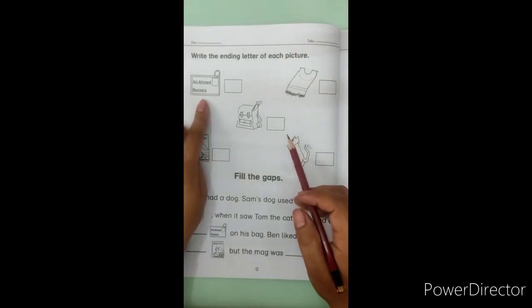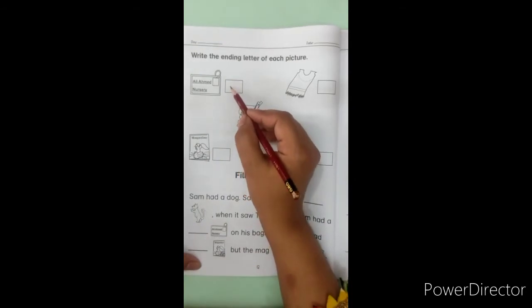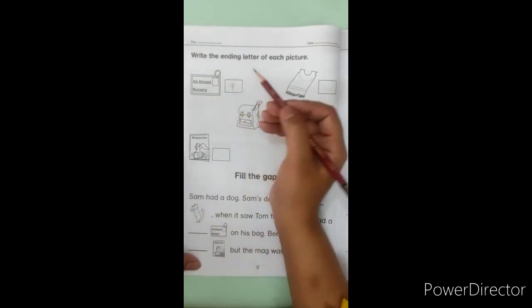Which picture is this? Tag. G came at the last. G came right? Tag. So what will we write here? G. You have to write inside the box only.